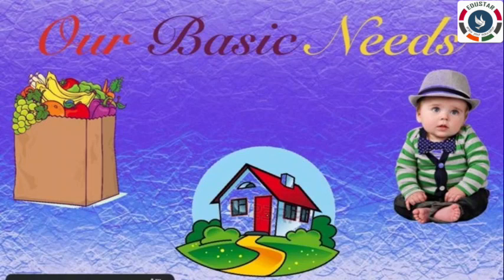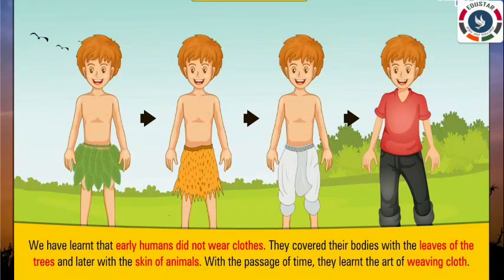Clothes are also one of our basic needs like food and shelter. Clothes not only protect us from heat, cold, rain and dust but also save us from insect bites. Wearing clean clothes makes us look smart. Early humans used to cover their bodies with leaves or barks of trees and skin of dead animals. As time progressed, human beings learned how to weave and stitch and started wearing stitched clothes.